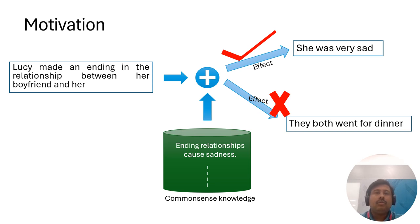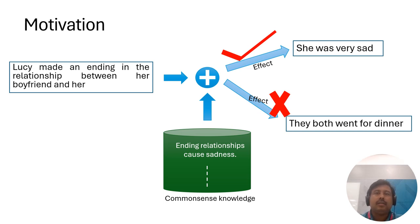Consider the scenario where Lucy ended the relationship with her boyfriend. Predicting the outcome with precision presents a challenge. However, leveraging common sense knowledge — such as 'ending a relationship causes sadness' — enhances the likelihood of accurately predicting a consequence: that she was very sad, rather than unrelated effects like 'they both went for dinner.'